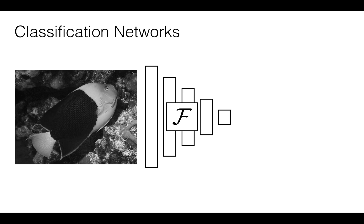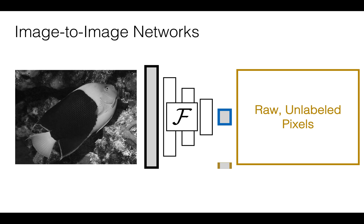Deep networks are extremely adept at mapping high-dimensional noisy images to clean, low-dimensional labels. But graphics tasks require high-dimensional outputs. This thesis investigates a number of image-to-image synthesis problems.